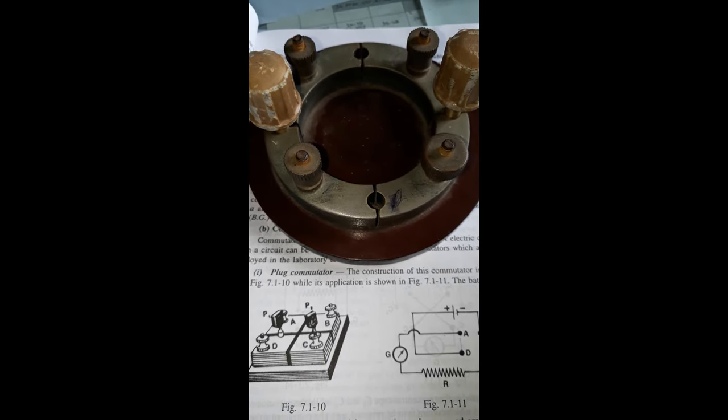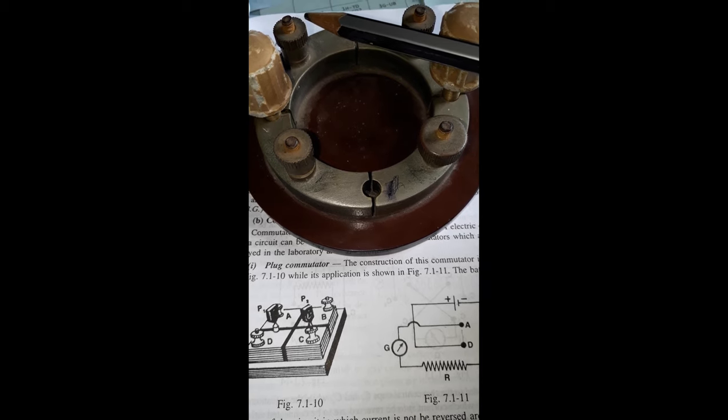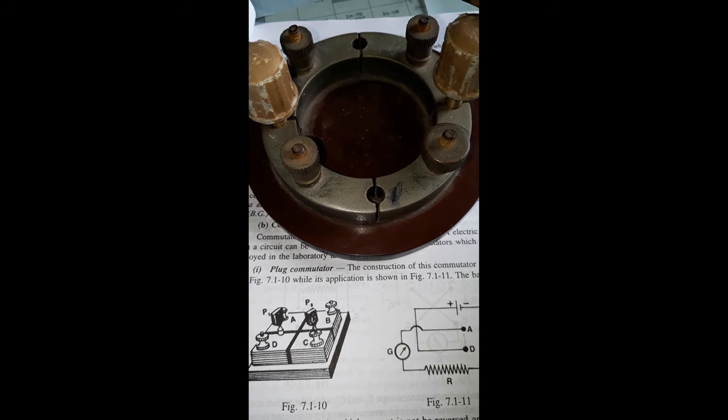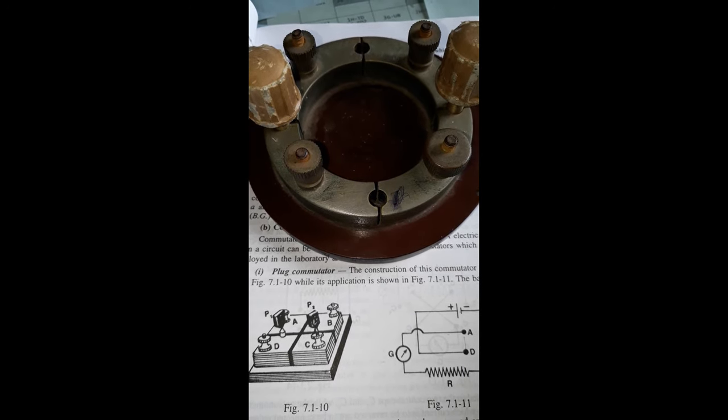The plug commutator: this point is A, this point is B, this point is D, this point is C.